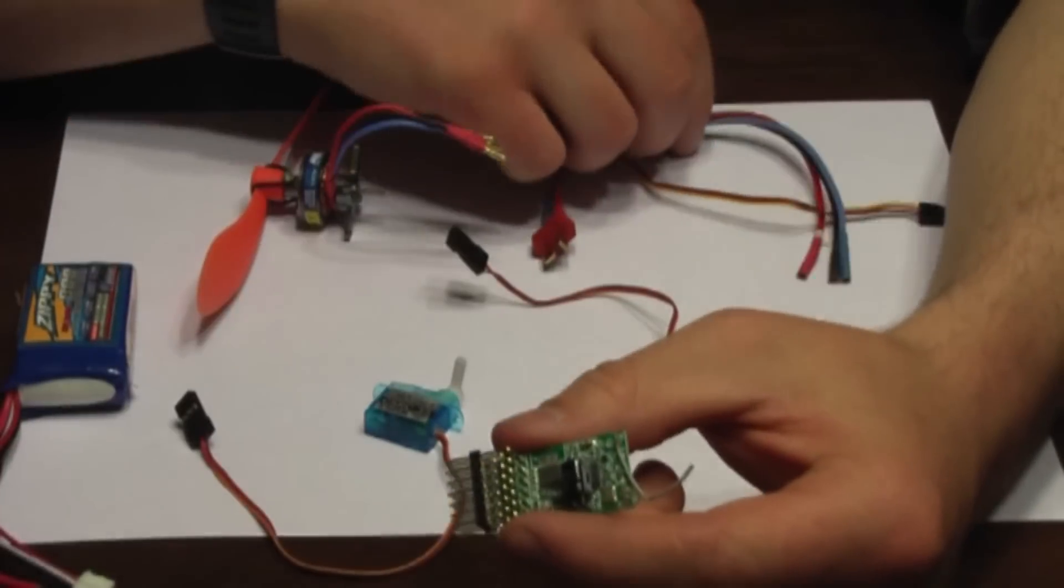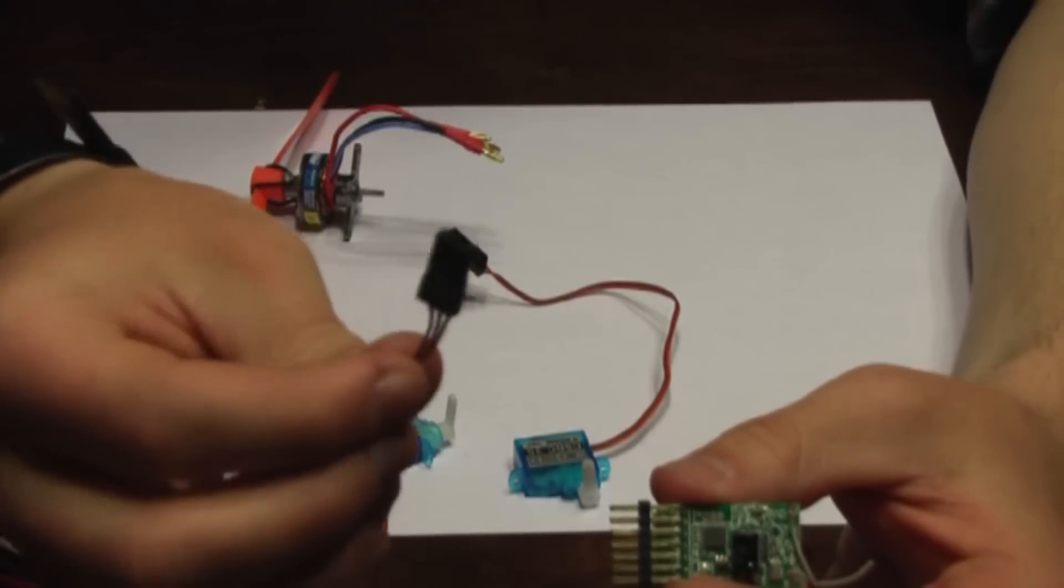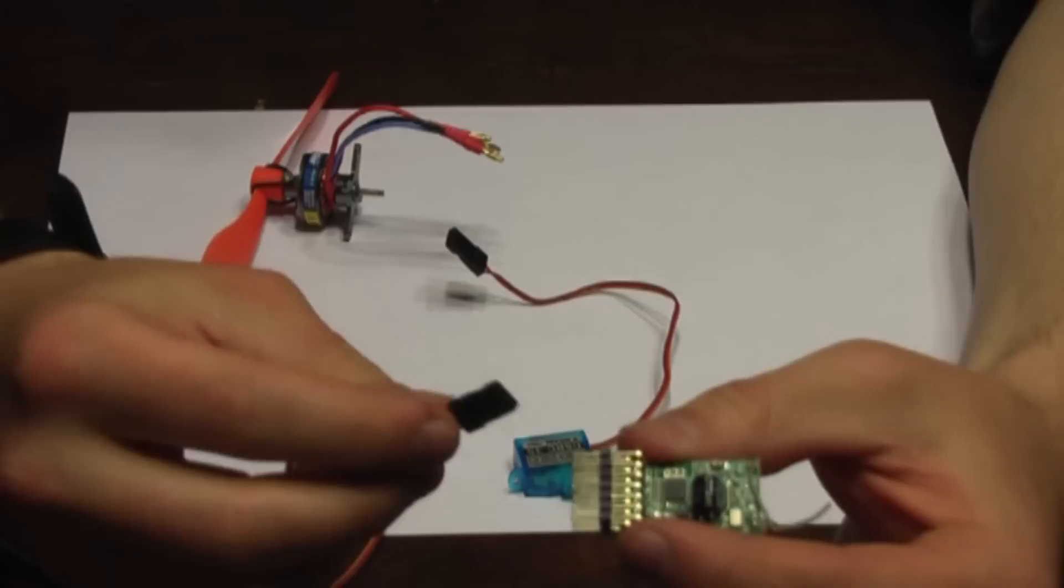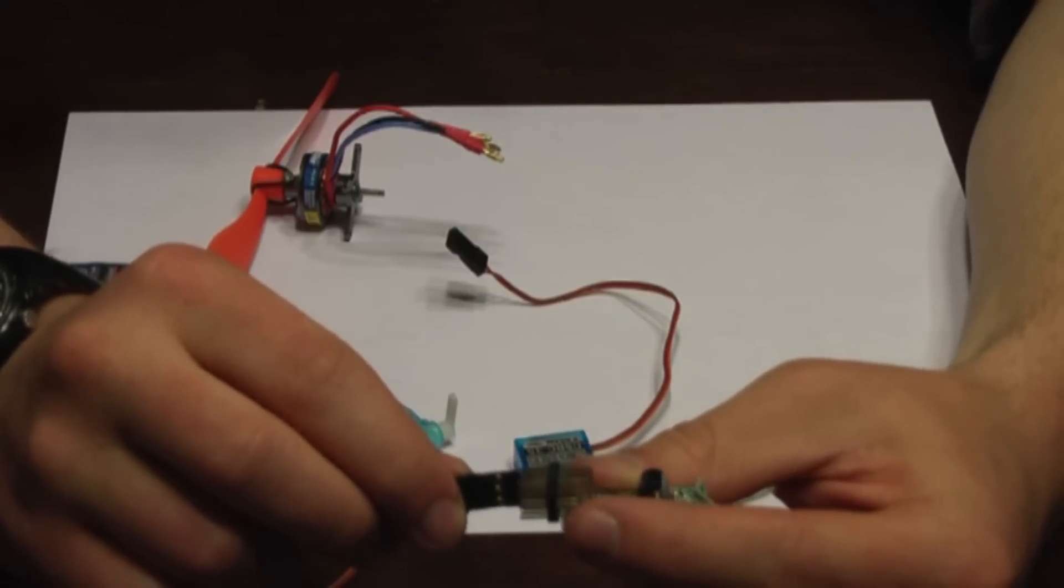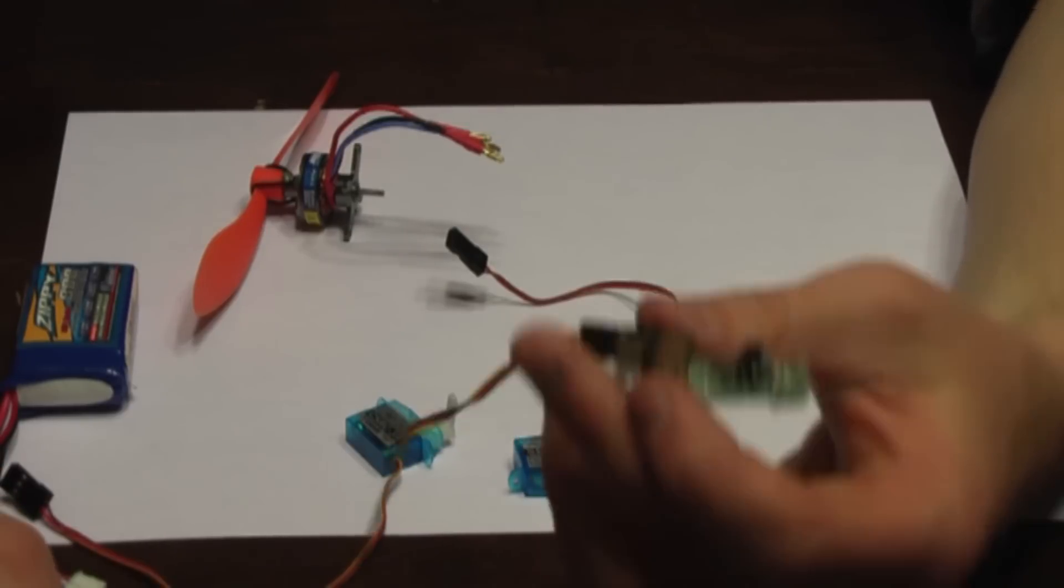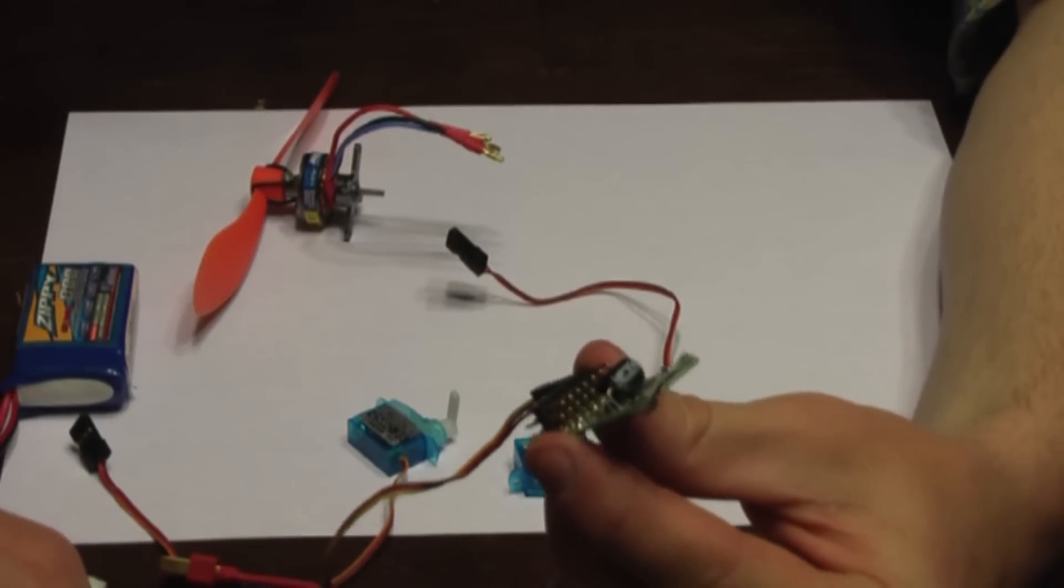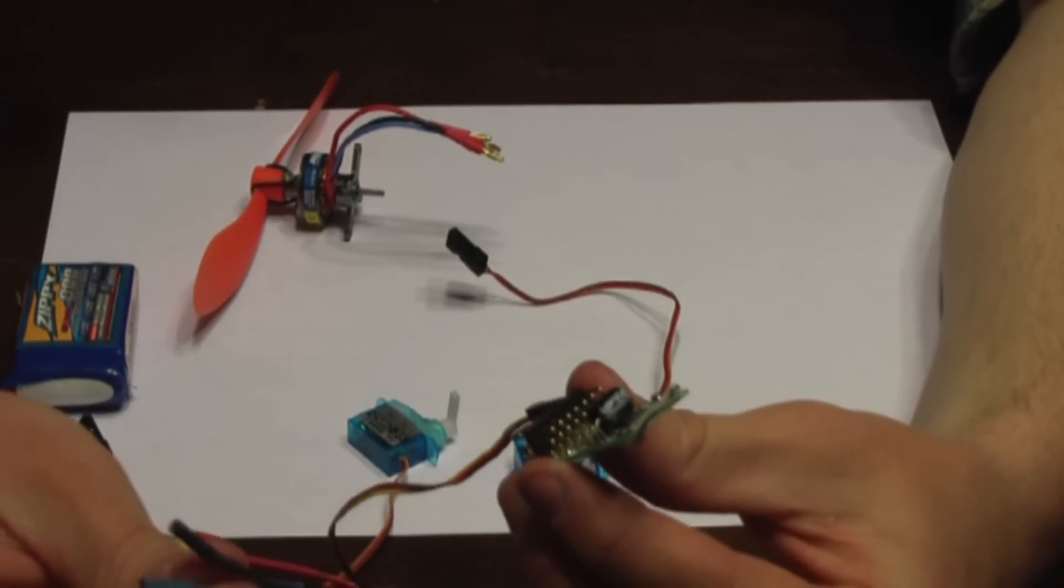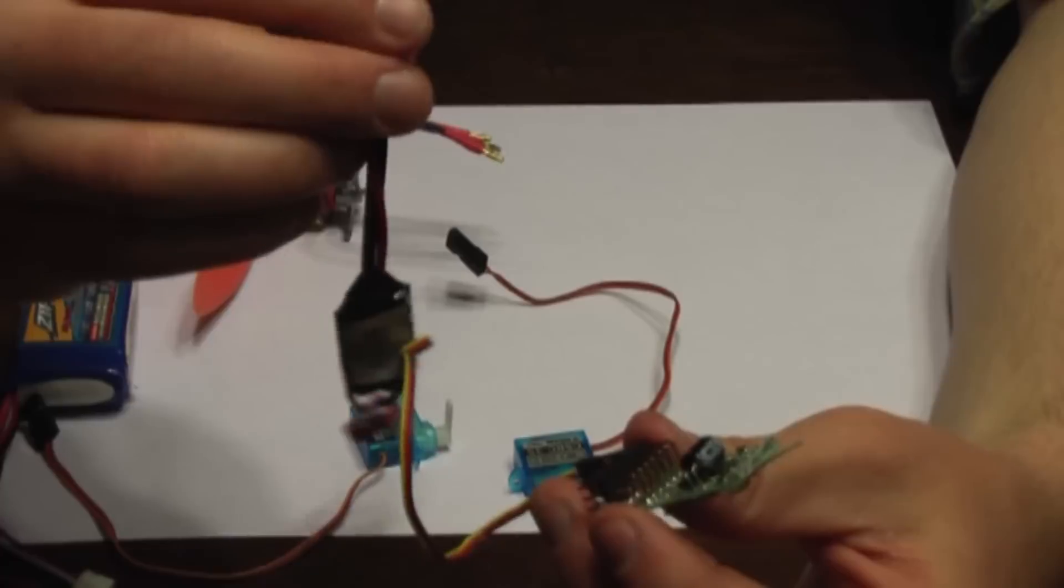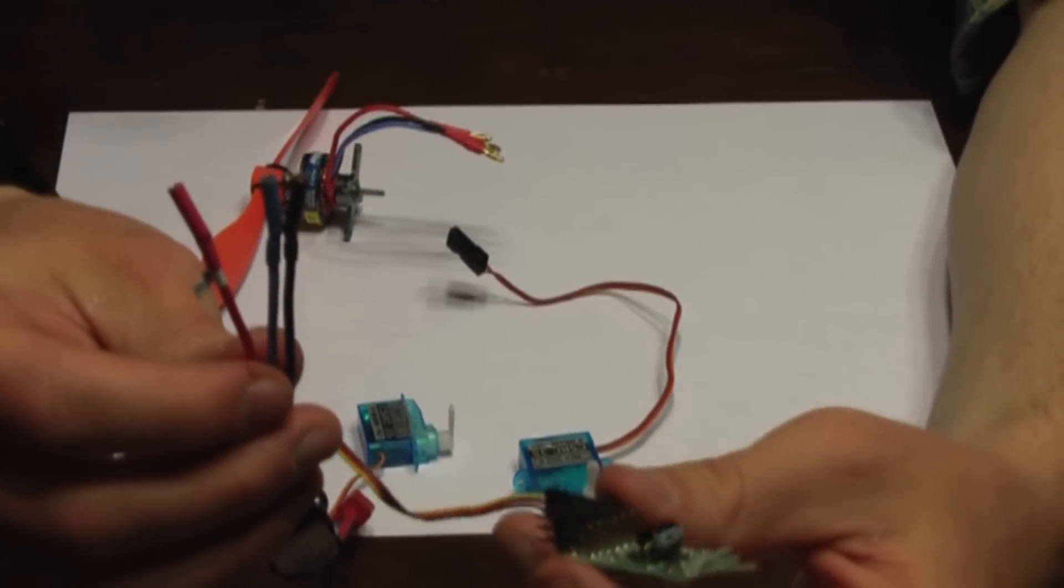So first thing we're going to hook up is the speed controller. So it's got this three wire lead with a plug on it. And you're going to plug that into the throttle channel, like that. So now, when you move the throttle stick on your transmitter, it's going to come through the speed controller and go to the motor and change the speed of the motor.